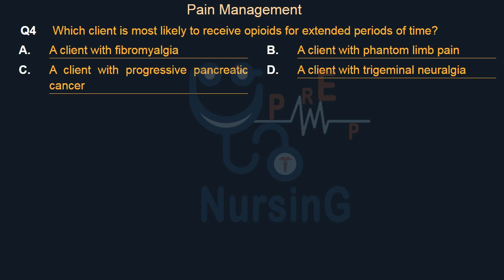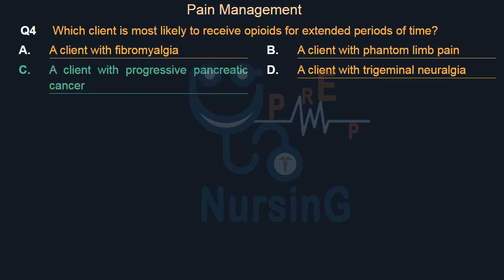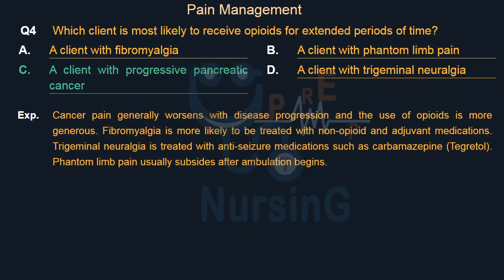Right answer is Option C: A client with progressive pancreatic cancer. Cancer pain generally worsens with disease progression and the use of opioids is more generous. Fibromyalgia is more likely to be treated with non-opioid and adjuvant medications. Trigeminal neuralgia is treated with anti-seizure medications such as carbamazepine (Tegretol). Phantom limb pain usually subsides after ambulation begins.